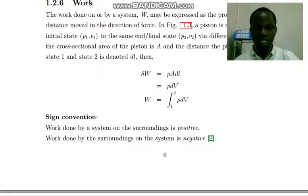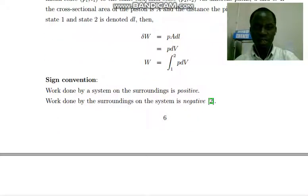The sign convention of work is very important. When work is done by a system on the surrounding, that work is positive. And work done by the surrounding on the system, that work is negative.